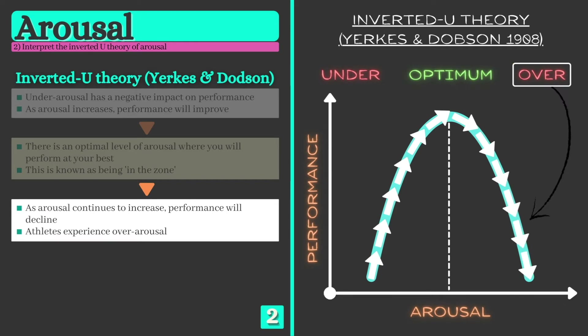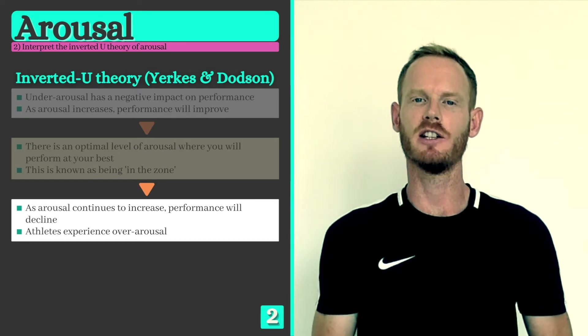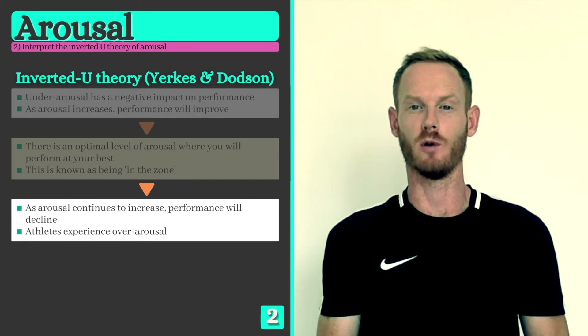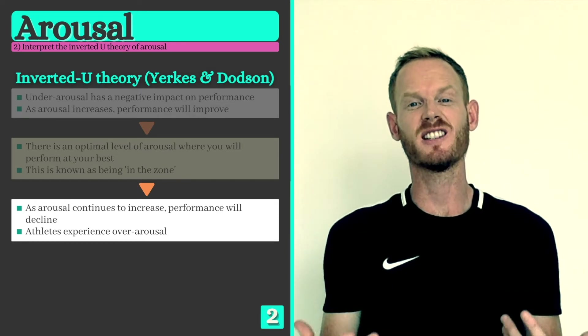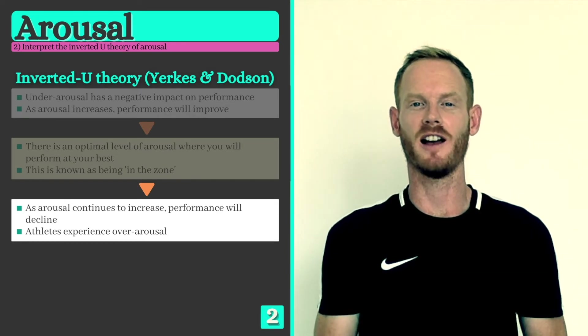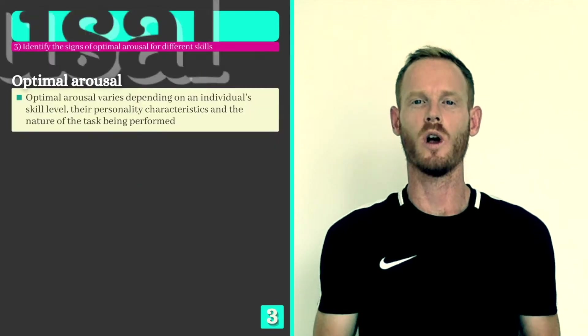Remember, over arousal leads to stress, anxiety and a number of physical symptoms, all of which have a negative impact on performance. So evidently reaching an optimal level of arousal is beneficial, but what does that level look like, and is it always the same?